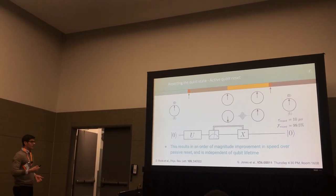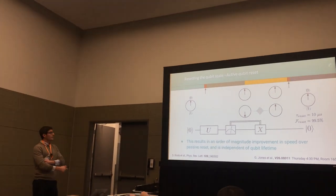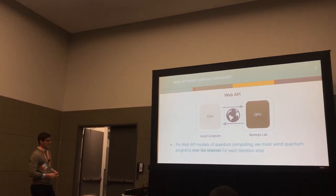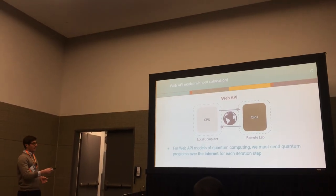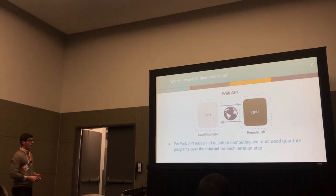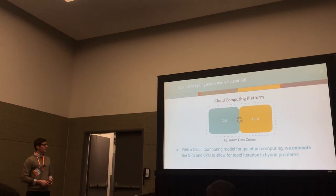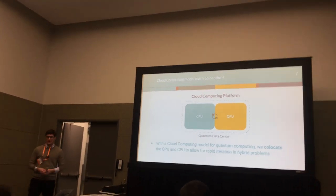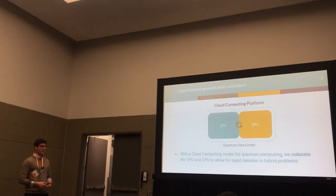Finally, we'll take a look at the communication time between our quantum and classical resources, and how we can drive down that component. In web API models of quantum computing, for each iteration step of a variational hybrid algorithm, we have to send our quantum program over the internet, receive our results back over the internet, and perform our optimization component on some local compute. If we instead use a cloud computing model for quantum computing, we can co-locate our quantum and classical resources, and what this does is allow us to iterate much more rapidly in these hybrid problems.